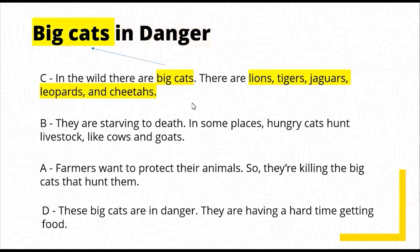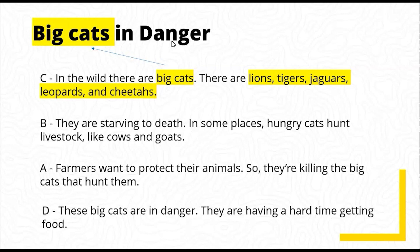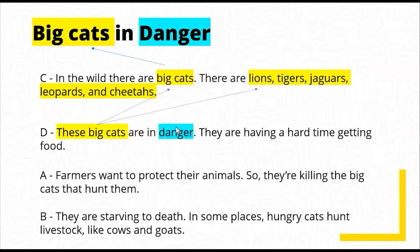We can highlight the links. I'm choosing sentence C because it mentions big cats right at the beginning and matches the title. The second part of the title is 'danger,' so my next sentence probably brings up that concept. Sentence D mentions danger and references 'these big cats' specifically — lions, tigers, jaguars, leopards, and cheetahs — so that should go second. Then we look for a thematic link with food, mentioned at the end of D as 'hard time getting food.' Which sentence mentions food? Sentence B has 'starving,' and sentence A has 'hungry' — and students know 'hungry.'